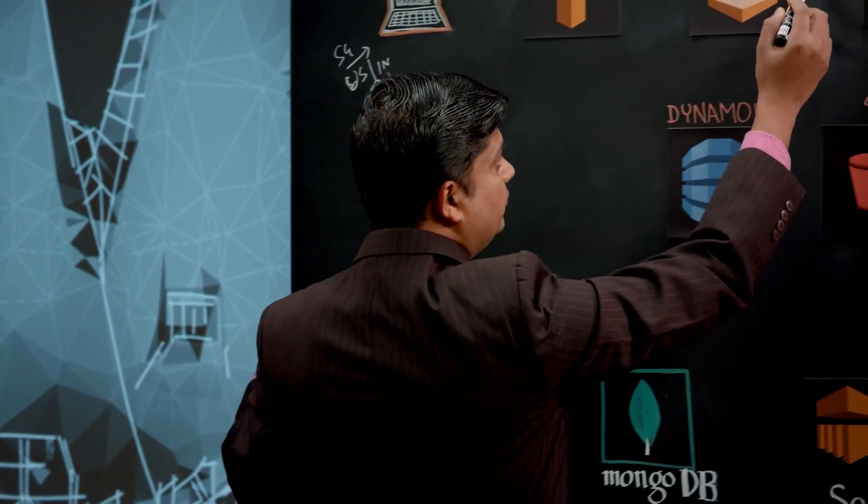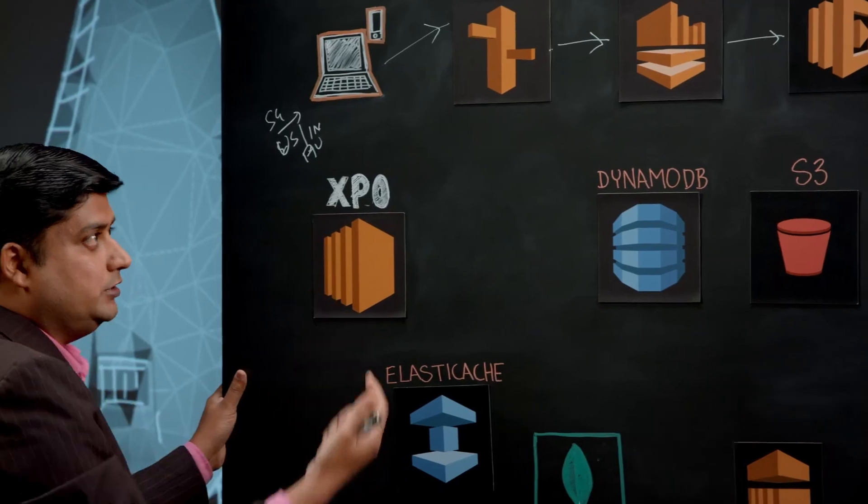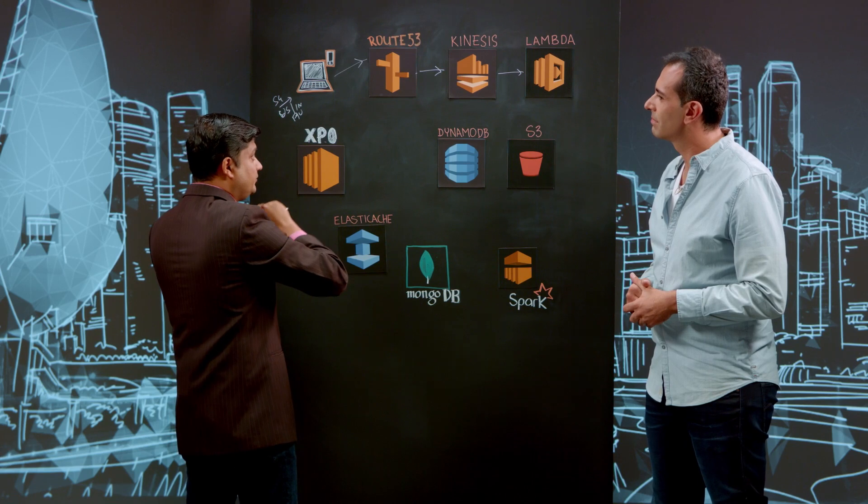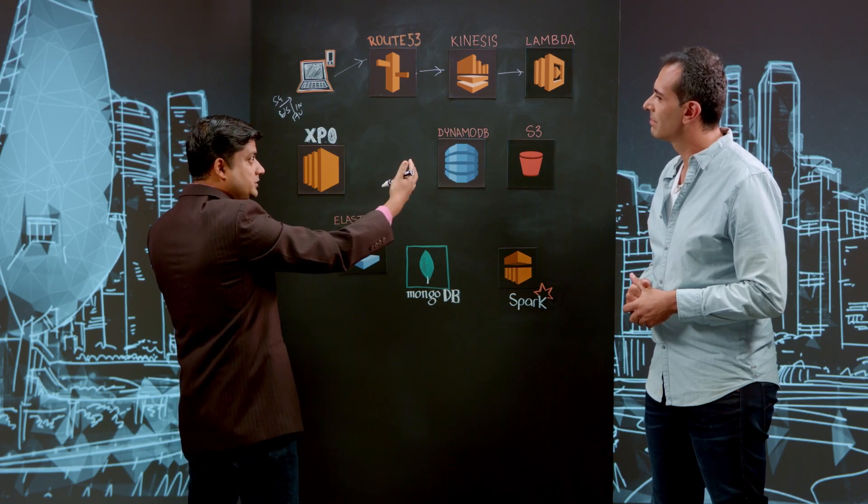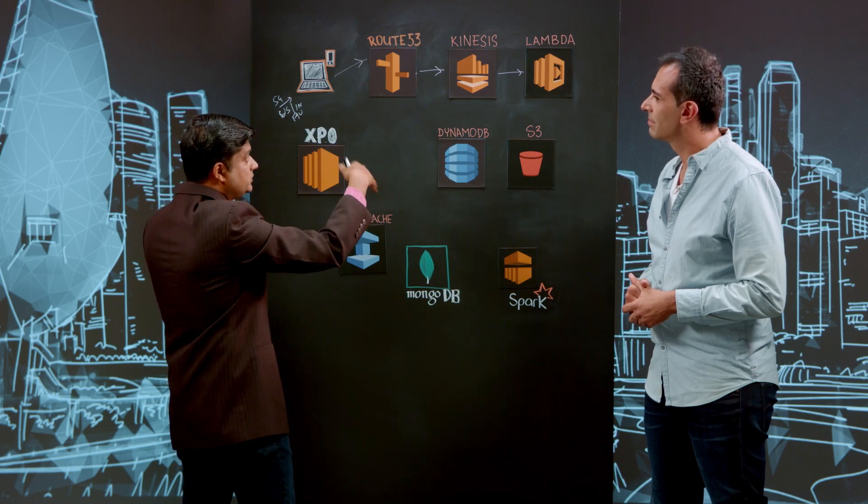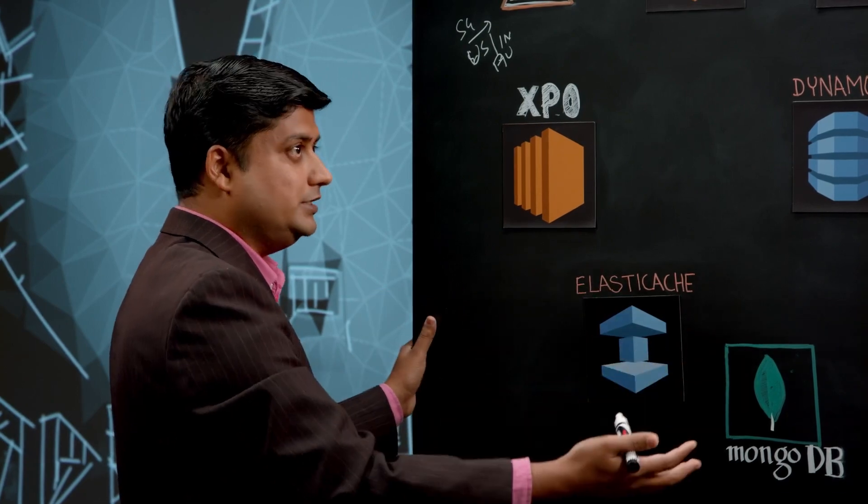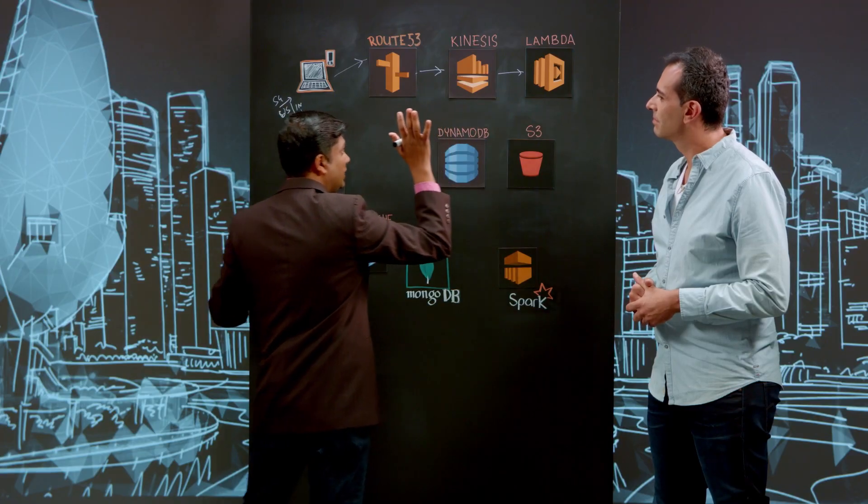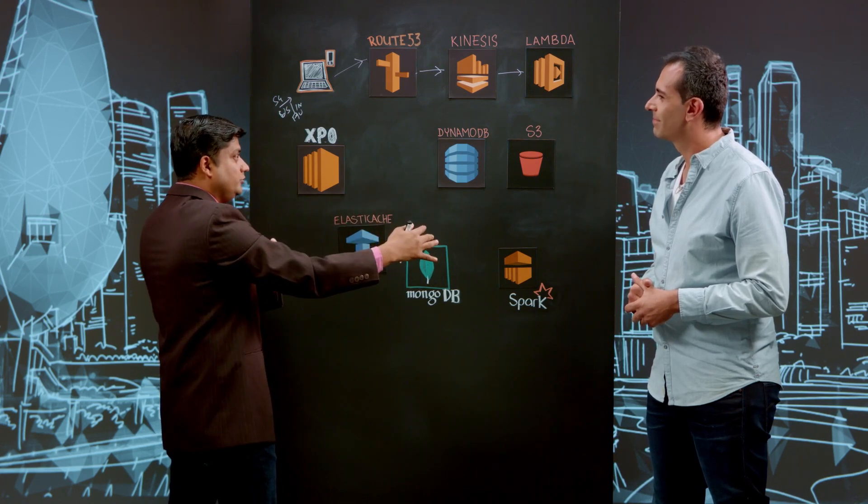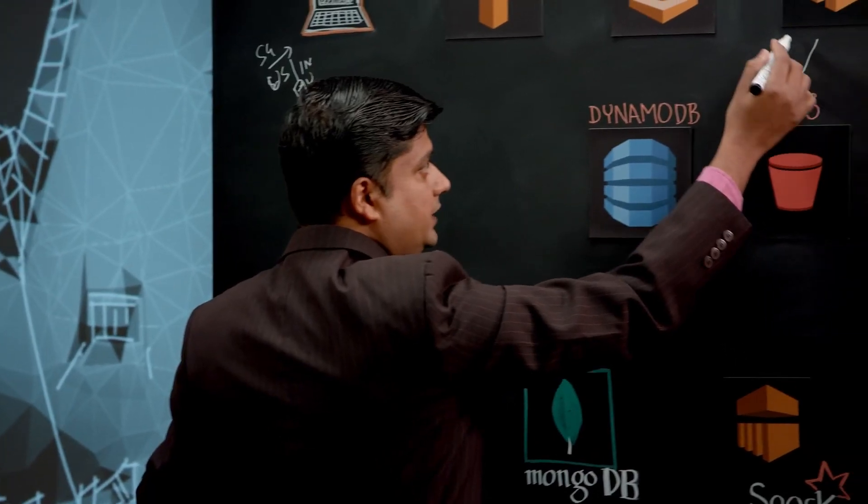From Kinesis we move the data - now instead of earlier where we used to have EC2 to process all the data, we replaced it with Lambda where you don't need to maintain a server. You just throw the request to Lambda, it will process and then the job is done. So there is a huge reduction in cost here as well as processing because you don't need to bother about how much time you need to run the service. Lambda has a five minute restriction, so as long as you're able to process within five minutes that's fine. Once that is done you push the data back to S3 and DynamoDB.